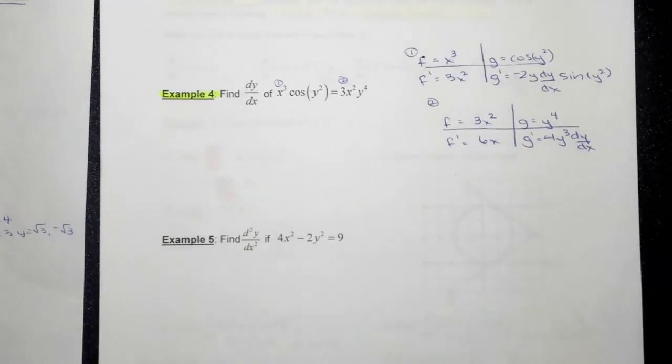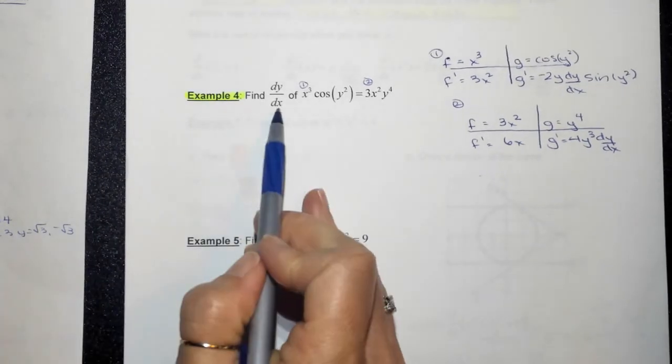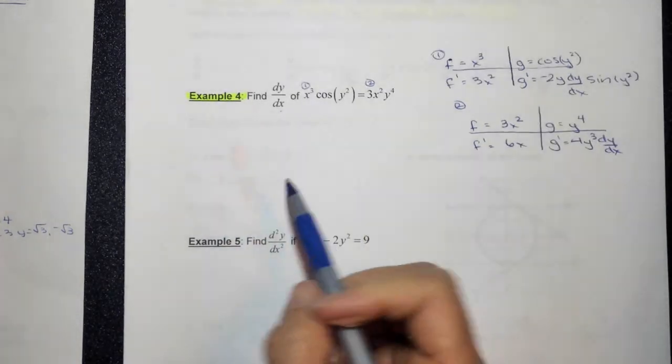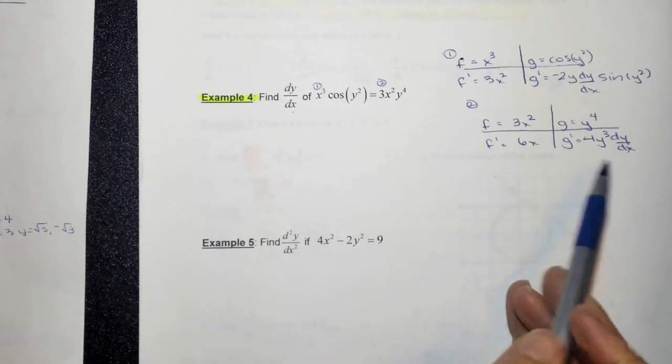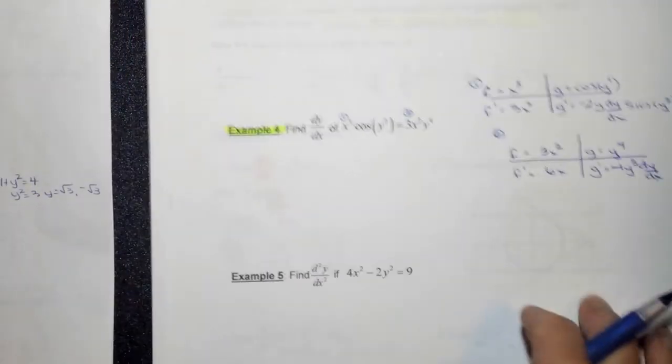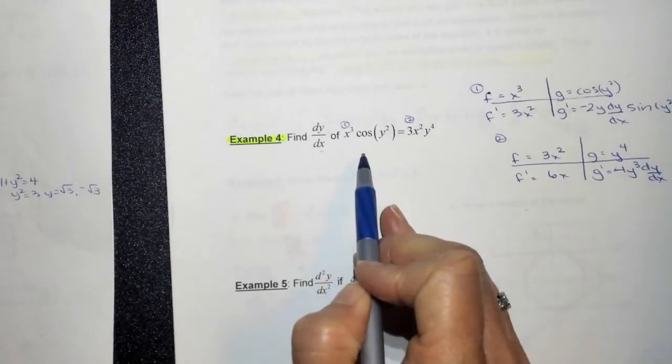Okay, so I have all my derivative pieces. Now I need to put everything together so that I can solve for dy dx. Because the whole idea is these pieces are going to be inside. When I take the derivative, I'll put it all together, and I have to isolate. So this is kind of a long problem. So over here, I'm going to start by taking the derivative of the left side.